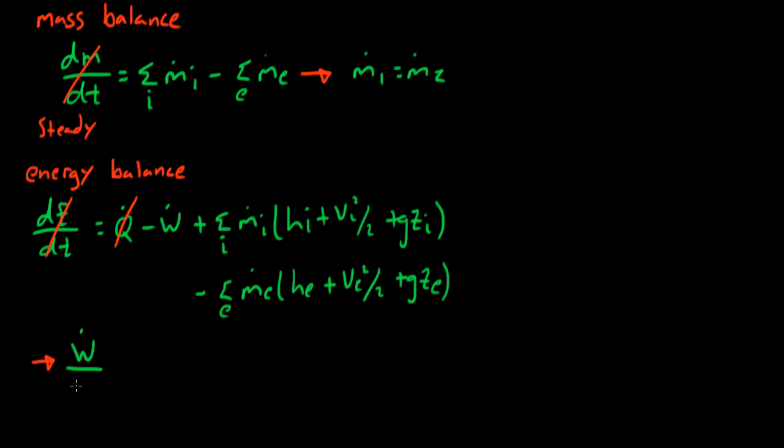Solving for the work and dividing by the mass flow rate, we have the specific enthalpy at station 1, plus the velocity at station 1 squared over 2, plus the acceleration due to gravity times the elevation at station 1, minus the same terms at station 2.